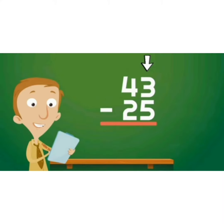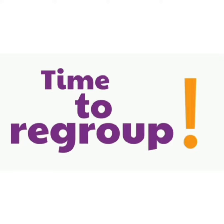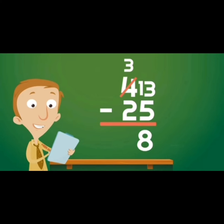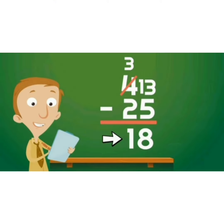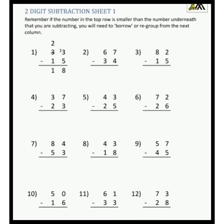Here is another example: 43 minus 25. It's time to regroup. We borrow 1 from the tens column, so 3 becomes 13. 13 minus 5 equals 8, and 3 minus 2 equals 1. So the difference is 18.